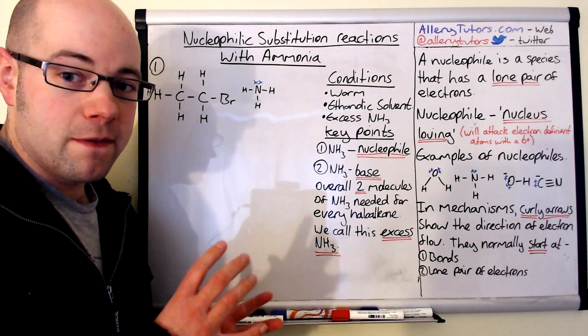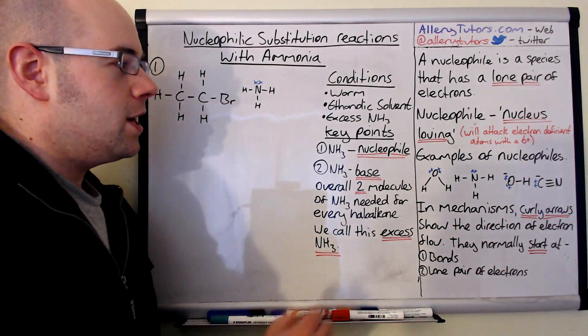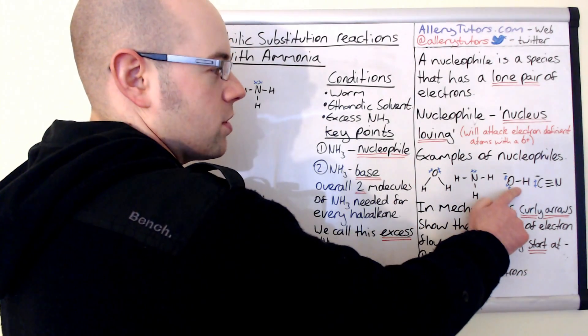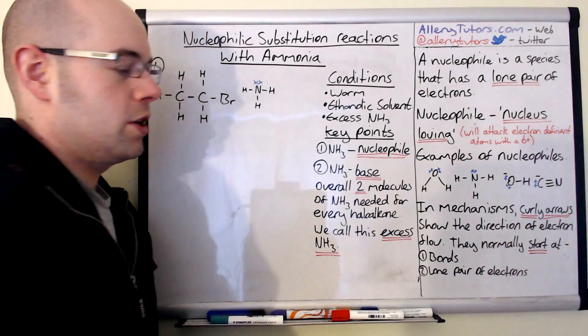Examples of nucleophiles come in four different types that you need to know for this part of chemistry: water, ammonia, OH- which is hydroxide, and cyanide ions as well. Obviously in this video we're going to look at the ammonia molecule.